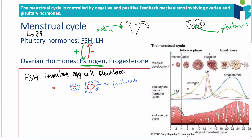Estrogen levels keep increasing because the follicle cells continue releasing it. At a certain concentration, estrogen exerts positive feedback on LH — the luteinizing hormone — stimulating its production. As LH levels increase, LH causes the developed follicle, now a mature egg cell surrounded by follicle cells, to undergo ovulation, releasing the egg cell from the ovaries. This is necessary for fertilization to eventually happen.